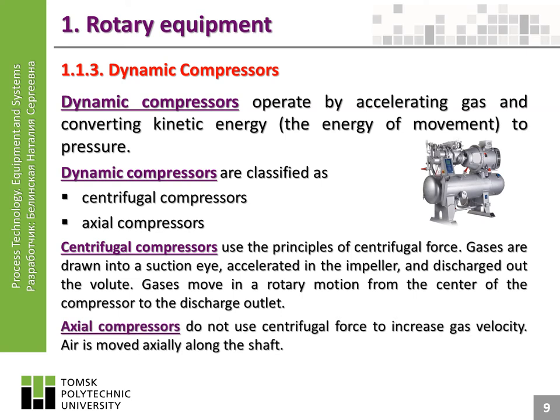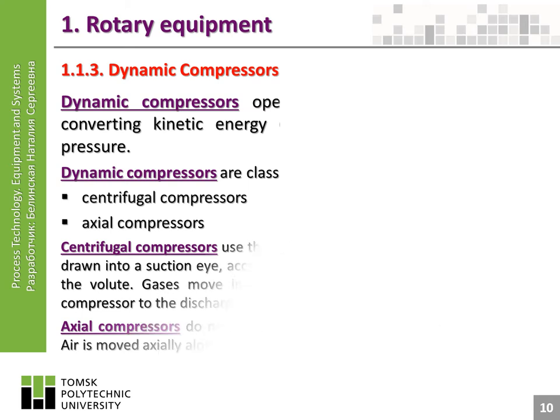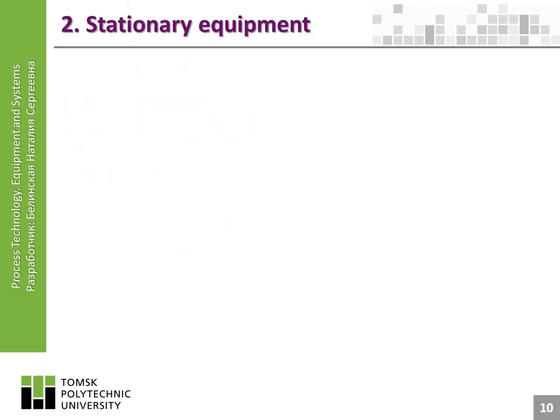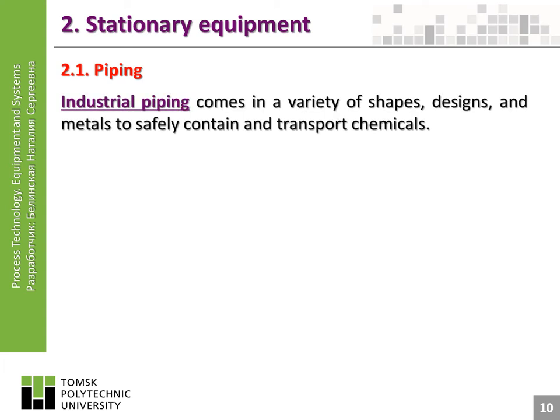Axial compressors do not use centrifugal force to increase gas velocity; air is moved axially along the shaft. Stationary equipment: piping. Industrial piping comes in a variety of shapes, designs, and metals to safely contain and transport chemicals. The engineering designer carefully selects the types of materials that are compatible with the chemicals and operational conditions.